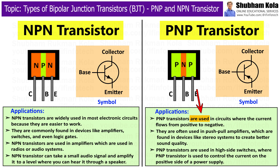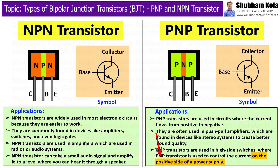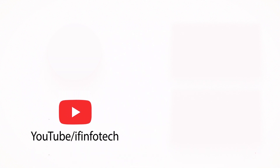PNP transistors are used in circuits where the current flows from positive to negative. They are often used in push-pull amplifiers, which are found in devices like stereo systems to create better sound quality. PNP transistors are also used in high-side switches, where the transistor is used to control current on the positive side of the power supply, as well as to control current in signal processing devices.